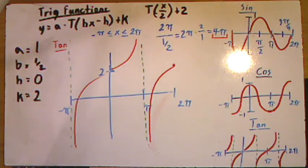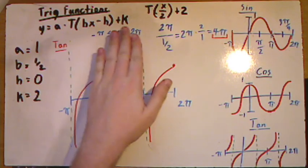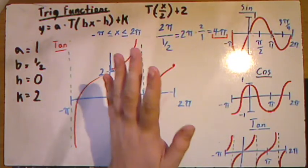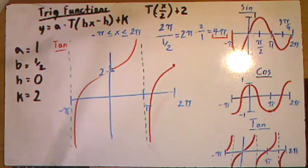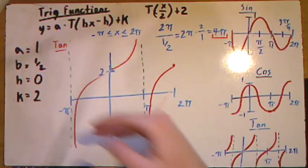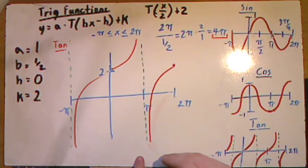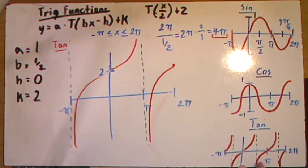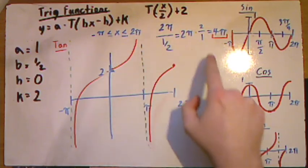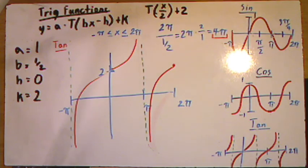Looking at these graphs can get confusing, so always remember this general formula that works for every trigonometric function — sine, cosine, tangent, and even ones we'll look at in the future. Remember: A is our amplitude — what is our peak, what is our minimum. B is frequency — how much of our phase do we see, do we see many phases or half or a quarter of a phase. H and K just pinpoint on the x and y axes where our starting point is. I hope this was helpful, enjoy your day, and stay safe and healthy.